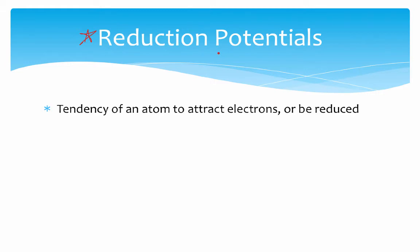So what reduction potentials are is listed right here. It is the tendency of an atom to attract electrons or to be reduced. The stronger your reduction potential is, the better you are at being reduced, which means the better oxidizing agent your particular substance actually is. This is measured in volts, just like the potentials from back in physics are, sometimes in millivolts when you're dealing with smaller substances.